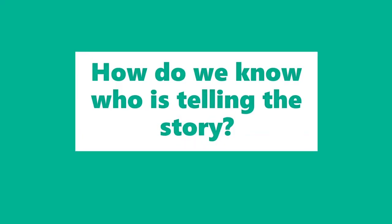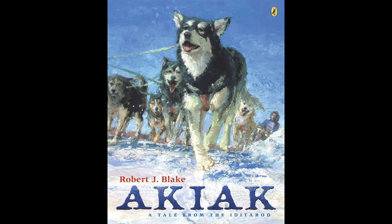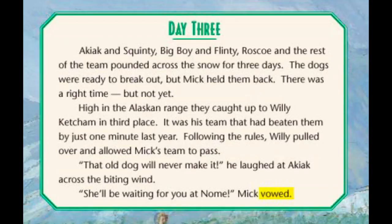How do we know who is telling the story? We're going to look at two examples from the books we've read these past few weeks. The first example is from the story Akiak — the book about the sled dog that's trying to win the Iditarod race in Alaska. I'm going to read one page from this book, and the entire time I want you to be thinking about who is telling this story.